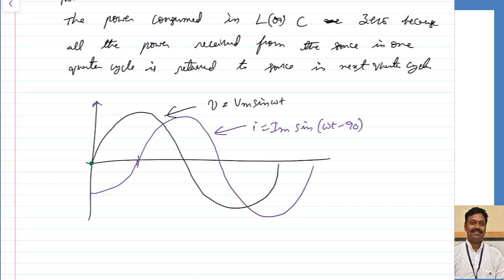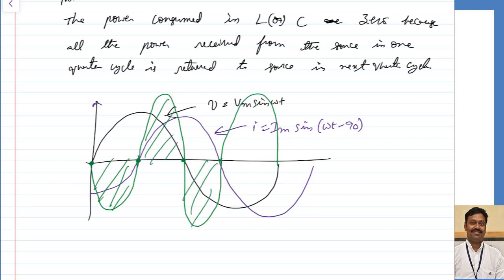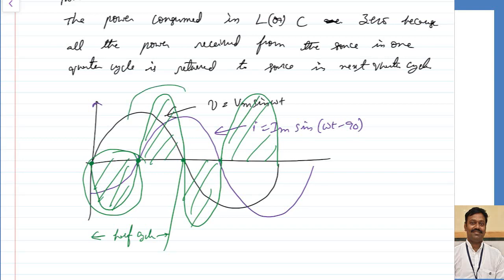At the zero-crossing points, the power is zero. In between, when multiplying the two quantities, if one sign is negative the power is negative; if both signs are the same the power is positive. So the power waveform alternates. In one half-cycle, one quarter cycle the power is taken and the next quarter cycle the power is returned back. The average power becomes zero, meaning the inductor does not take any active part — it takes power then returns power cyclically.